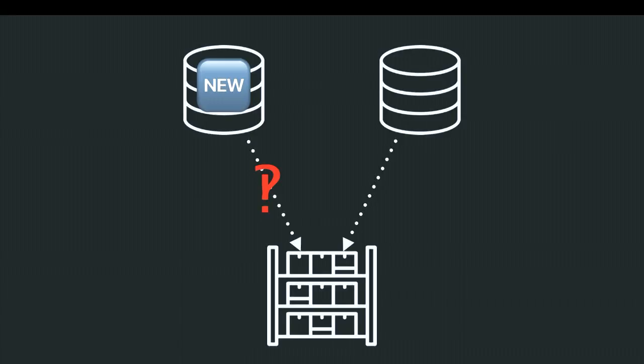Then somebody on your team decides to change a piece of the schema because they need to support a new feature. But everybody forgets about the data warehouse until a week later when somebody on the accounting team — and by the way, when did you start using this? — says, 'why isn't the reporting warehouse updating?' Well, crap. So somebody updates it and life goes on.